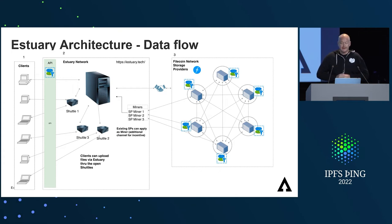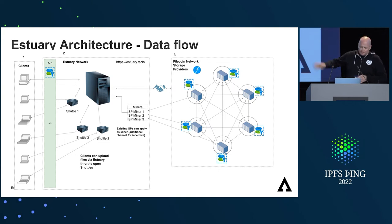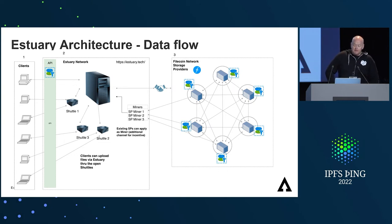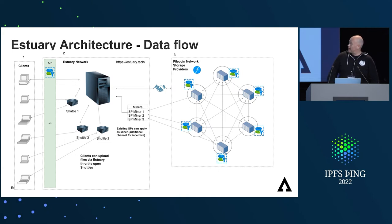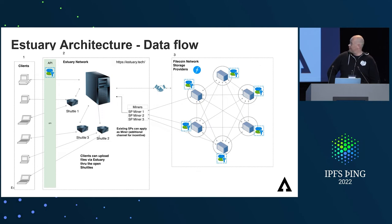Estuary has two primary components. The main node, or primary node, is like that big giant box in the middle, and then it's got shuttles as well that help scale the pinning of data. Clients communicate with the Estuary nodes — the primary node or the secondary shuttle nodes. The node checks for registered service providers, creates six deals with 6X replication, and then transfers data using the BitSwap protocol. We also utilize a local client called FillClient, which is a lightweight Filecoin client maintained by Application Research, the group I work for.